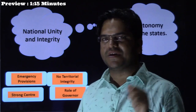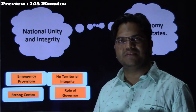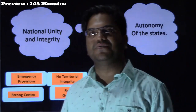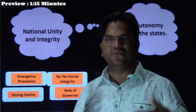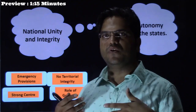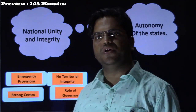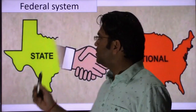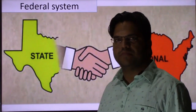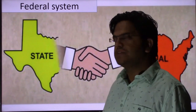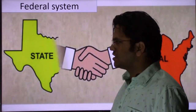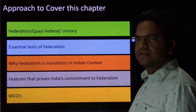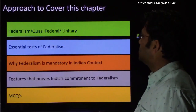Ayushman Bharat scheme, a health scheme, has been refused to be executed by the West Bengal government. They say they have their own health model, and that was completely a political reason. So in this video, we are going to discuss the Federal System, which is Chapter 2 in Part 2 of Laxmikant. Let us move to the next slide and discuss how we have planned to cover this chapter.